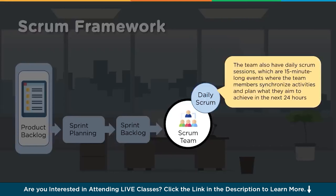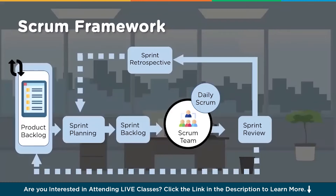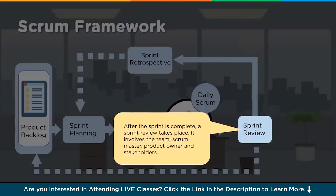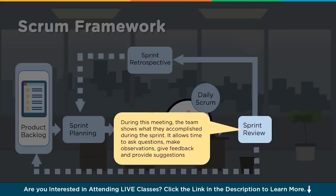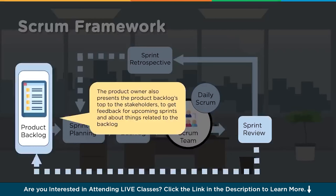If further discussions are needed to correct issues from the daily scrum, those can be taken as a separate meeting - not as part of the daily scrum. Generally the daily scrum meeting is 15 minutes and should not go more than that. The sprint review happens once the sprint is complete, involving the team, scrum master, product owner, and stakeholders to understand what was agreed upon and what was delivered. The team shows what they accomplished during the sprint, allowing time for questions, observations, feedback, and suggestions.